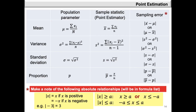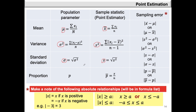For the mean, the variance, the standard deviation and the proportion, we can define the population parameter and the corresponding sample statistic. For the mean, the population parameter is mu and the sample statistic is X bar, which is the sum of X divided by n. For the variance, the population parameter is sigma squared and the sample statistic is S squared. For the standard deviation, it's sigma, which is the square root of the variance, and the sample statistic is S. For the proportion, the parameter is P and the sample statistic is P bar, which is defined as X divided by n.